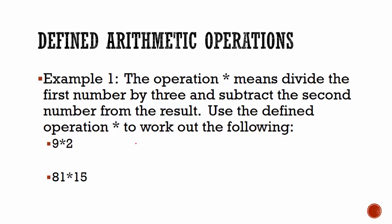So we divide the first number by 3. This is equal to 9 divided by 3, and then you take that result and subtract the second number. 9 divided by 3 is 3, 3 take away 2 is equal to 1.